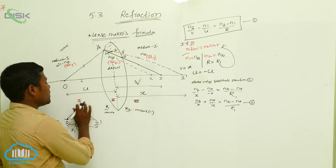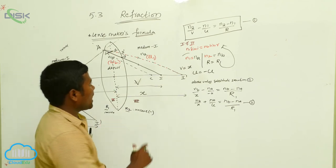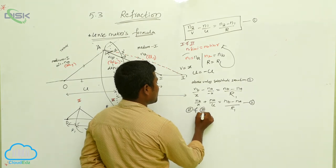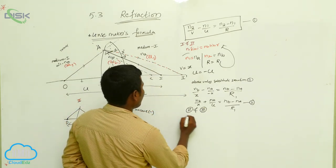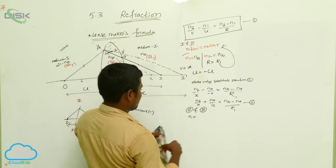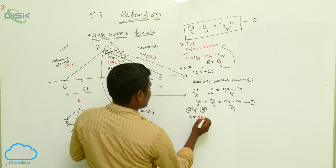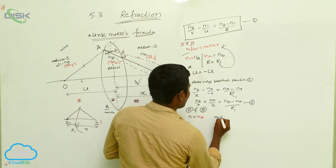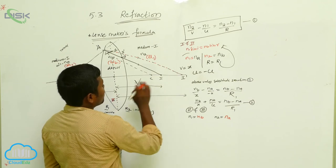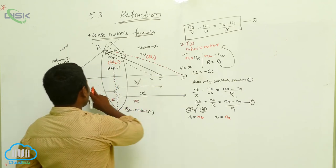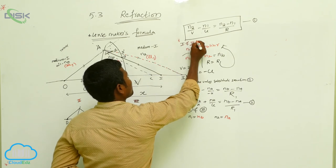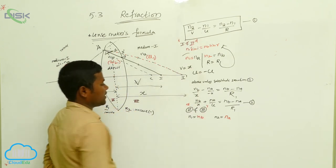Now I am taking mediums 2 and 3. Again for this pair, the first medium is now the denser one and the second is the rarer one. So n1 equals n_b and n2 equals n_a. Here the denser medium transitions to the rarer medium. I am thinking of this as my object — the ray went like this and it is coming and reaching at this point.